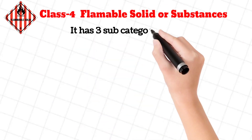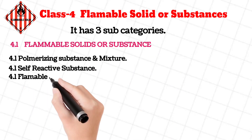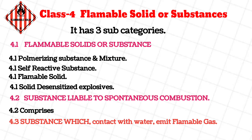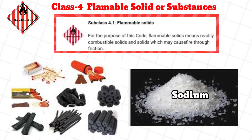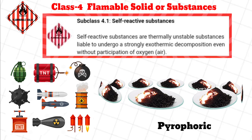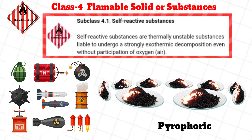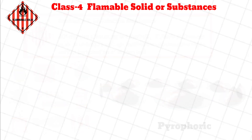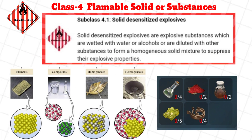Class 4: Flammable solids or substances, with three subcategories. Subclass 4.1, Flammable solids: for the purpose of this code, flammable solids means readily combustible solids and solids which may cause a fire through friction. Subclass 4.1, Self-reactive substances: thermally unstable substances liable to undergo a strongly exothermic decomposition even without participation of oxygen or air. Subclass 4.1, Solid desensitized explosives: explosive substances which are wetted with water or alcohols or are diluted with other substances to form a homogeneous solid mixture to suppress their explosive properties.